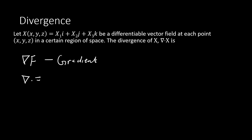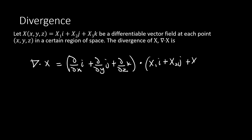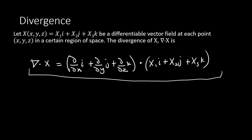So NABLA dot X is defined as the partial derivative with respect to x·i plus partial derivative with respect to y·j plus partial derivative with respect to z·k, dot product with x1·i plus x2·j plus x3·k. This is how our divergence is represented — the dot product of NABLA and X. Let me do a quick reminder concerning dot product. When taking the dot product of two vectors, we get a scalar as our answer.